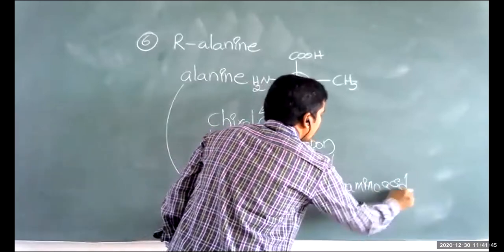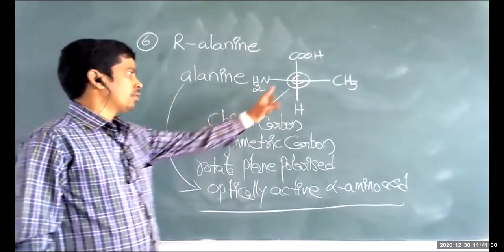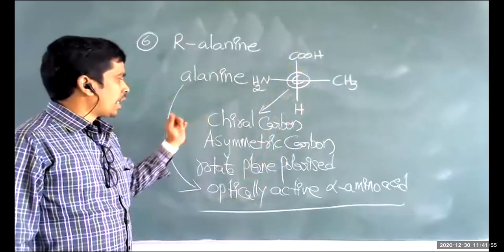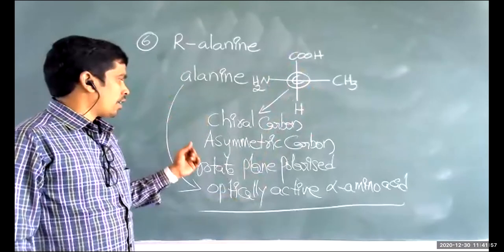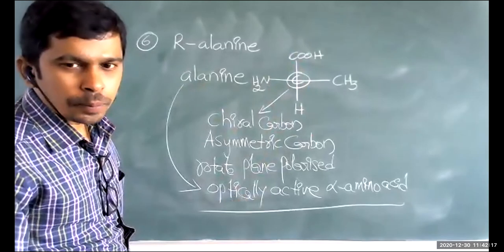Please remember this statement: alanine contains a chiral carbon having four different groups. So the asymmetric carbon containing compound can rotate plane polarizing light either clockwise or anticlockwise. Hence alanine is an example of optically active alpha amino acid. But here the question asks us to find R-alanine. So we are going to see the options — what is meant by R-alanine and how can we understand R-alanine.